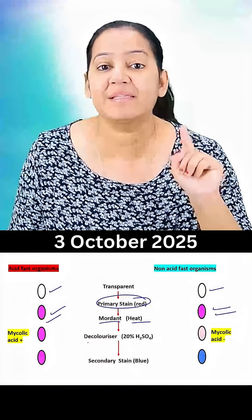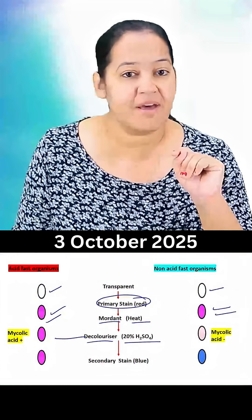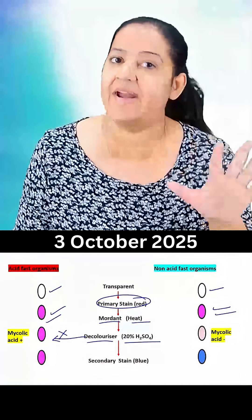Now the third step is main, it is decolorizer. We use 20% sulfuric acid that is H2SO4. Now some bacteria are resistant, they do not get decolorized, they are still red in color.